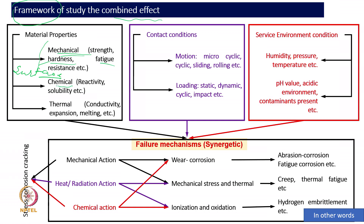For chemical properties, solubility and wettability must be accounted for. Thermal conductivity and thermal expansion are important, as is the melting temperature — melting wear is severe wear, and when operating temperature is 0.3 to 0.7 times the melting temperature, creep plays a major role. For contact conditions, we need to account for micro-cyclic loading — fretting motion of amplitude 1 to 2 microns — as well as cyclic loading, sliding, and rolling.